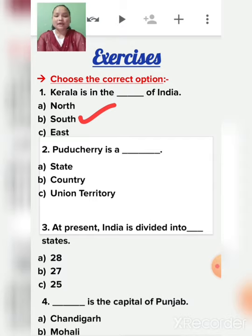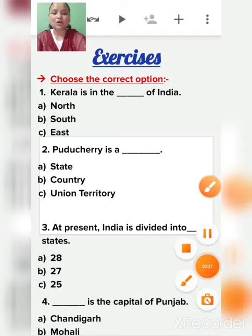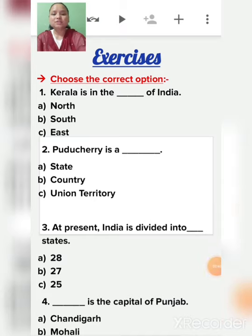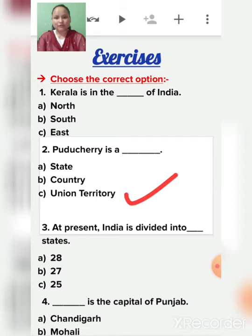You know that south Indian foods like idli and dosa belong to the south side of India. So Kerala is in the south of India. Next: Puducherry is a dash - state, country, or union territory? Puducherry is a union territory.